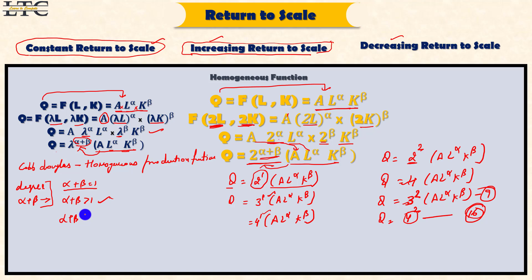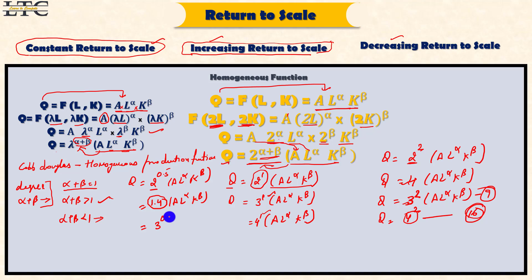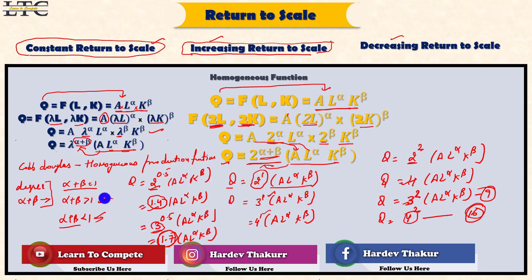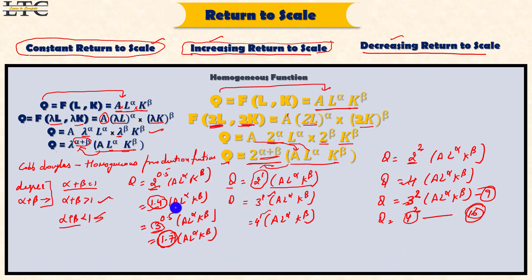The third case is alpha plus beta less than 1. For example, if alpha plus beta is 0.5, then 2^0.5 is approximately 1.4. So if we increase labor and capital by 2, output only increases by 1.4. If we increase inputs by 3, output is 3^0.5, approximately 1.7. So when we increase inputs by 2, output only increases by 1.4, and when inputs increase by 3, output only increases by 1.7 — output increases by less than the proportional increase in inputs. So when alpha plus beta is less than 1, that is the case of decreasing return to scale.